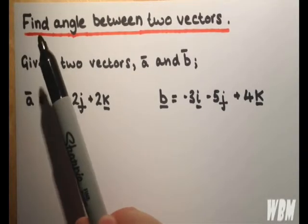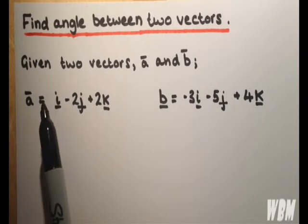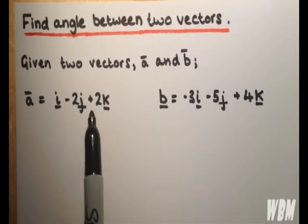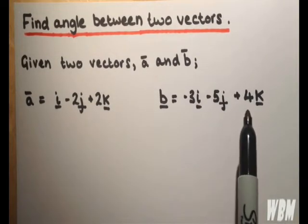Hi guys, in today's video we're going to be finding the angle between two vectors. We're given these vectors as i minus 2j plus 2k and minus 3i minus 5j plus 4k.